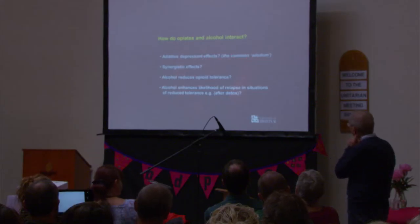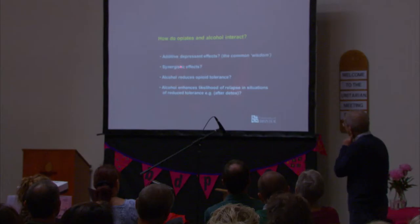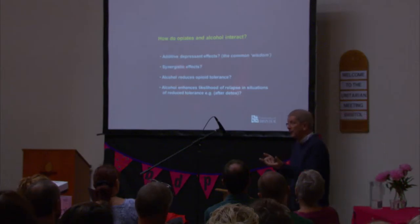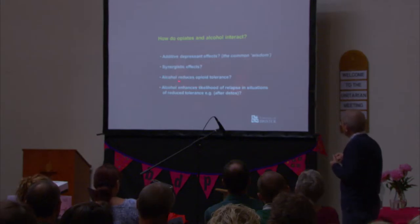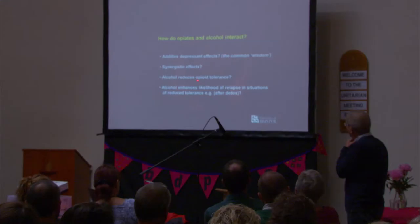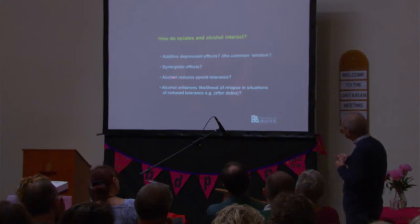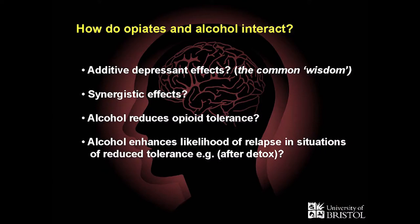A second possibility is that they could synergize — in the presence of alcohol, the effect of heroin could be even greater. A third possibility is an interaction at the level of tolerance, where alcohol actually reduces opiate tolerance. And finally, nothing to do with mechanisms — it could be that when somebody has detoxed, having a drink might encourage them to take heroin again, which is when you get an overdose. The first three would be pharmacological, the last more psychological.